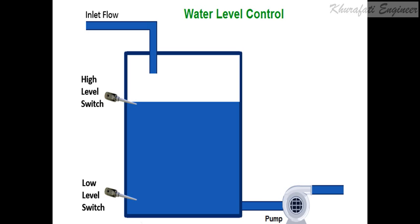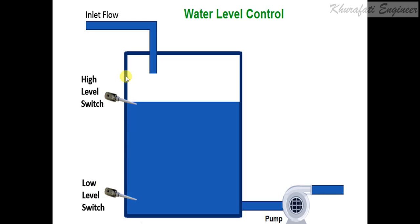In this video I am going to tell you about the tank filling process. Here two float valves are used: the low level sensor and the high level sensor, which can also be known as low level float valve and high level float valve. The function of these float valves is that when the water level reaches the low level this will be switched on, and when the water level reaches the high level this float valve will be switched on.